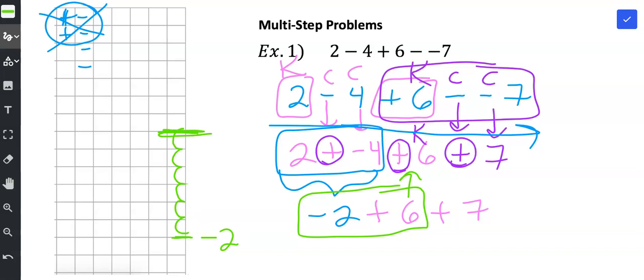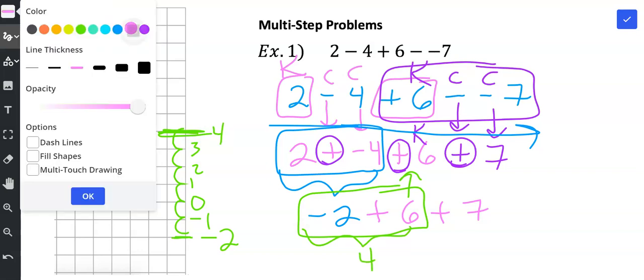And I need to figure out where I ended up. I'm increasing. So the next number would be negative 1, then 0, then 1, then 2, then 3, and I end up at 4. So negative 2 plus 6 gives me 4. And then I bring down the rest of the problem, the plus 7.